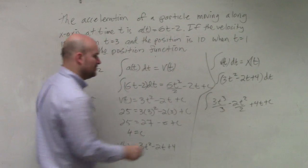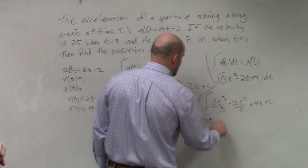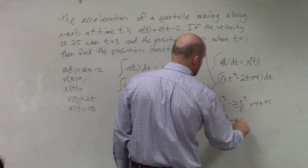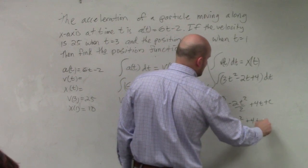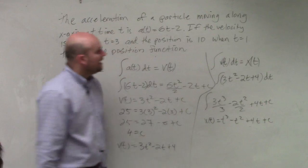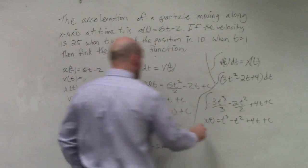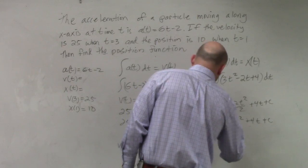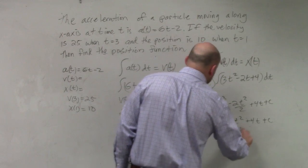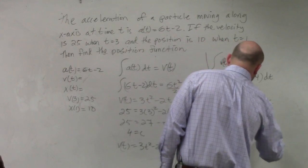So therefore, you can say x of t equals t cubed minus t squared plus 4t plus c. And then, last but not least, again, we're given this information. 10 equals 1 cubed minus 1 squared plus 4 times 1 plus c.